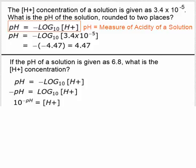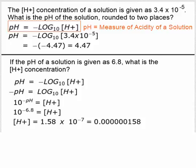So we just plug in 6.8 for the pH, and we get H plus concentration equals 10 to the negative 6.8. You can put that in your calculator, and you get 1.58 times 10 to the negative 7th.